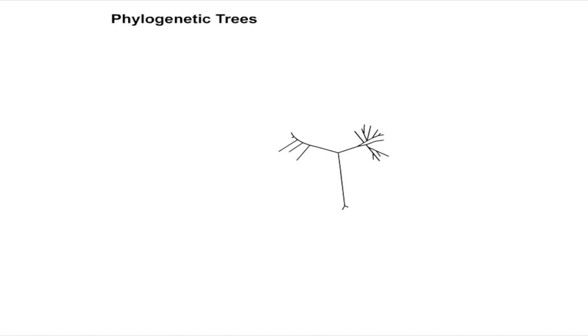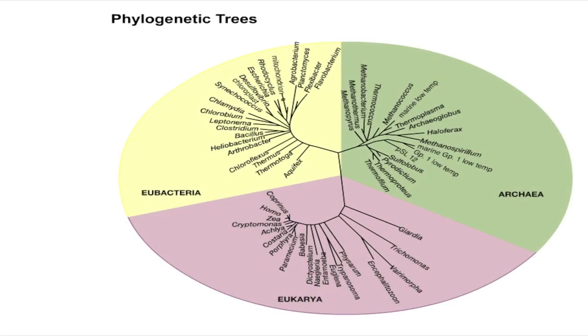All living things share a common ancestor that lived about 4 billion years ago. Phylogenetic trees graphically represent the evolutionary relationships between different organisms.